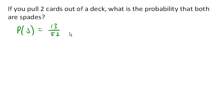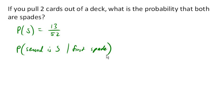So what's the probability that the second card is a spade, given that the first was a spade? In order for both cards to come out spades, the first is going to have to be a spade and the second. Given that the first one was a spade, there's now one less card in the deck and one less spade in the deck. So 12 out of 51 is the probability of the second one being a spade.